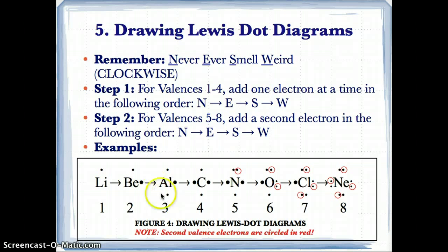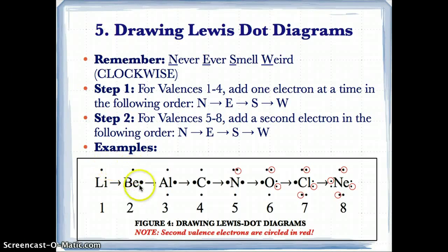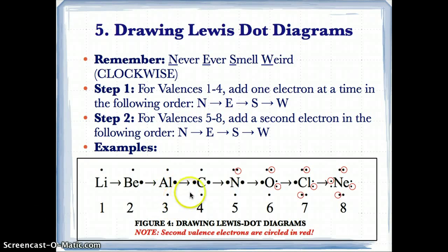We draw it as follows. For Li with 1 valence electron, we place one dot at north. For Be with 2 valence electrons, we go north then east. For Al with 3 valence electrons, we go north, east, south. And for C with 4 valence electrons, we go north, east, south, west.